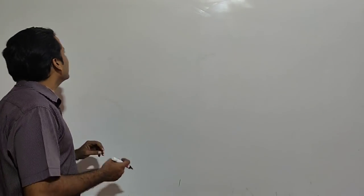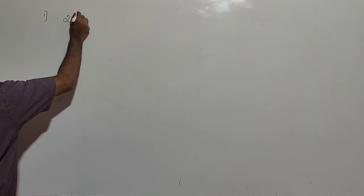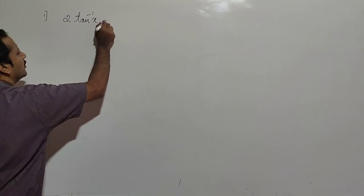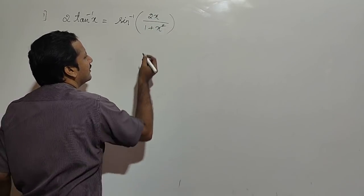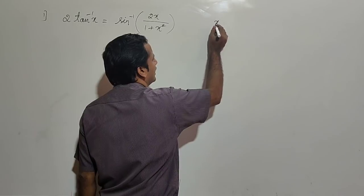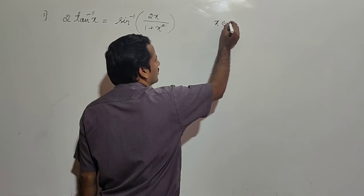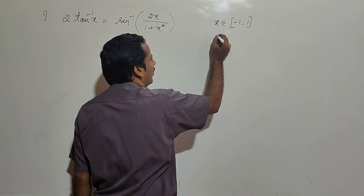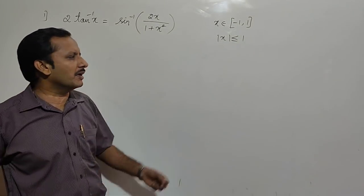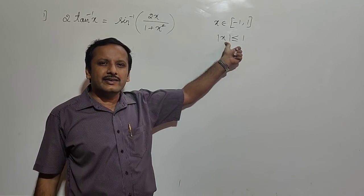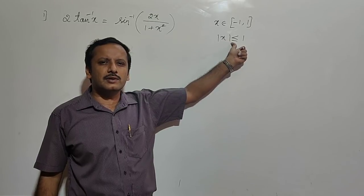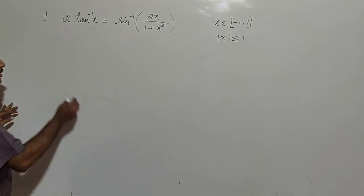Students, let us look at some more properties of inverse trigonometric functions. The first one is: 2 tan⁻¹(x) is equal to sin⁻¹(2x/(1+x²)), when x belongs to the closed interval [-1, 1], or equivalently, |x| ≤ 1, which means x is greater than or equal to -1 but less than or equal to +1. We shall now prove this result.